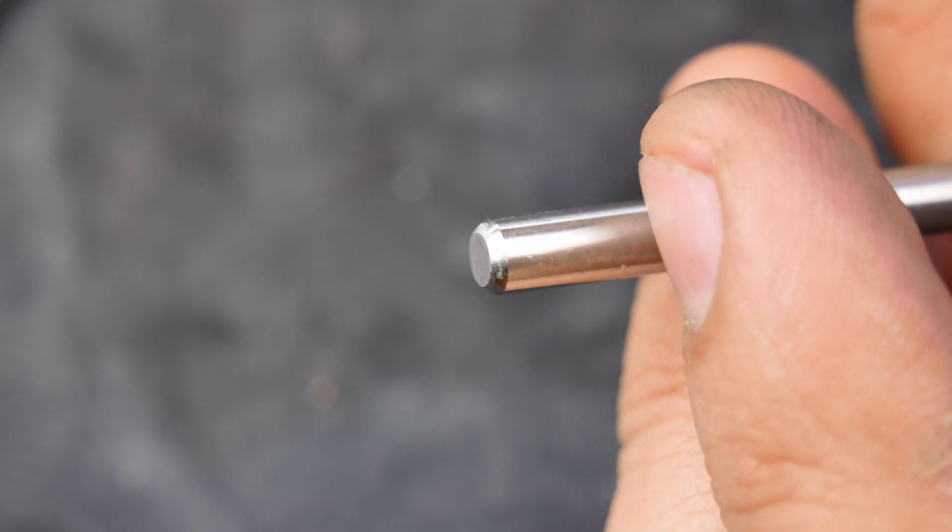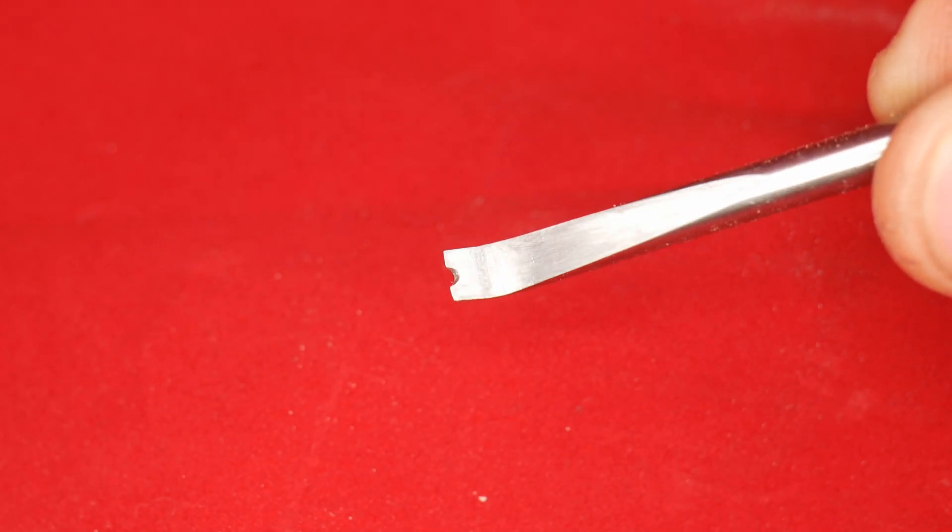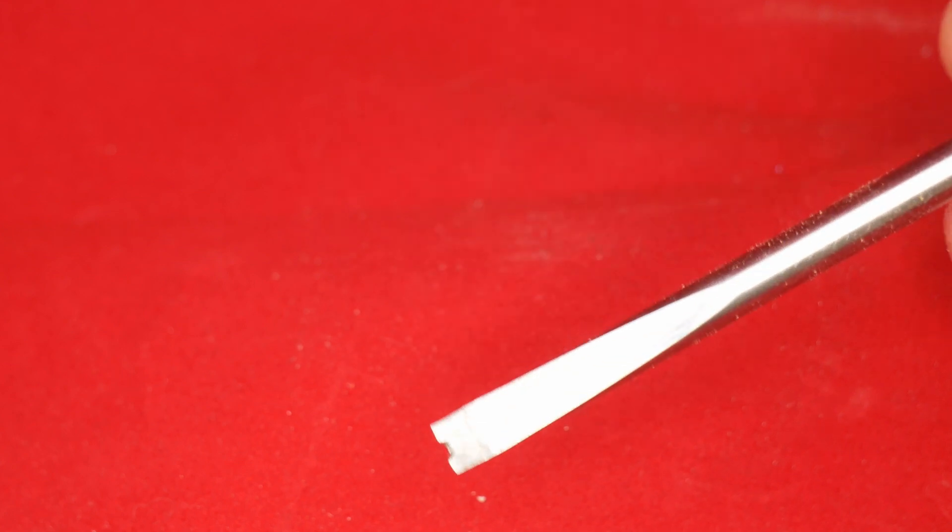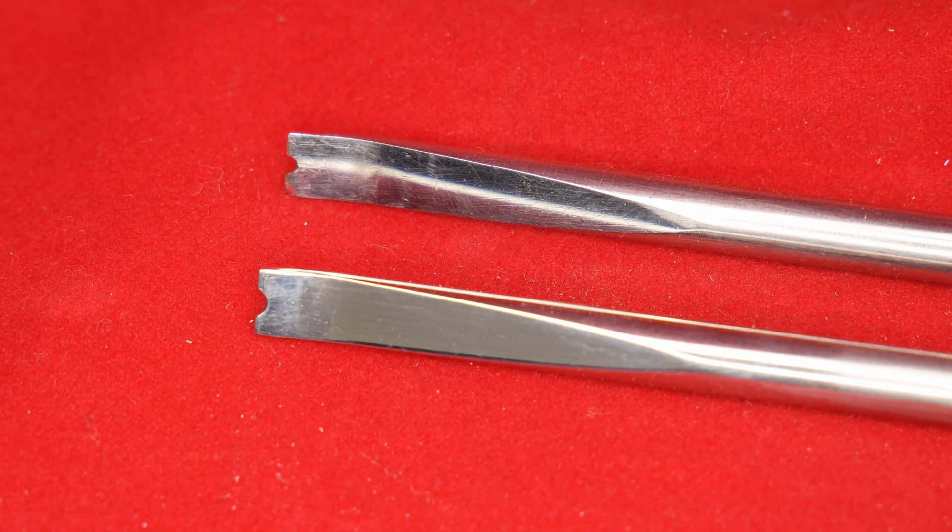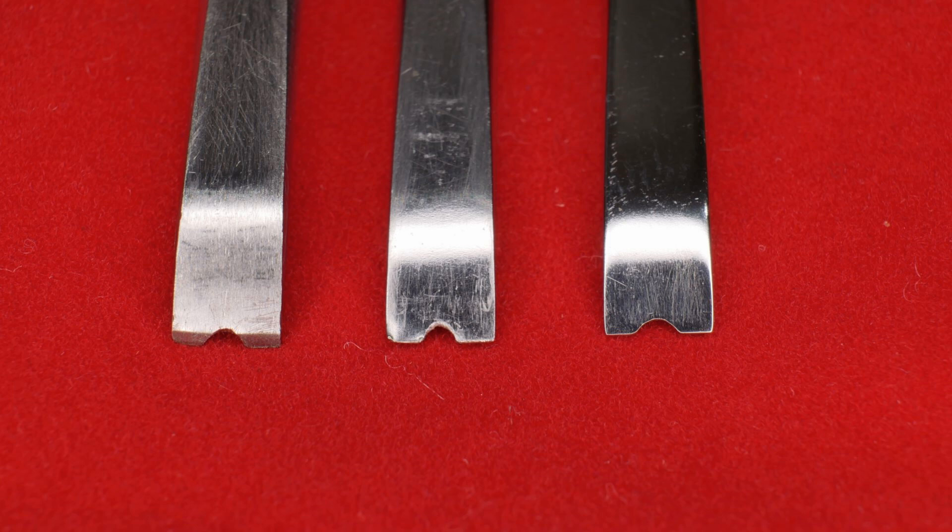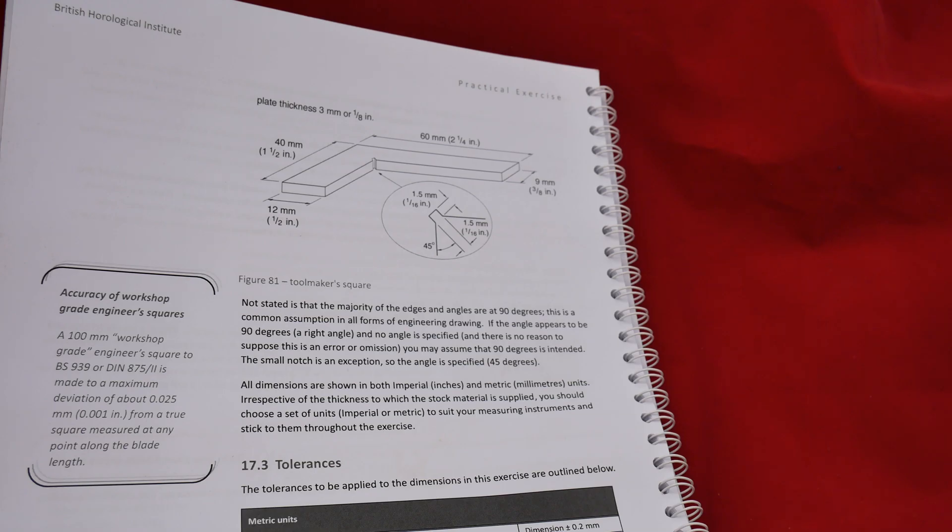A bit of sandpaper to finish everything up, and bang! My first practical exercise was complete. But one isn't enough, so I cracked on and knocked out a couple more. I've clearly got a lot of work to do to get my filing up to the level that I need to make some nice-looking clocks. But for my first practical exercise, I'm pretty happy with that, and I'm feeling enthusiastic about cracking on with the second exercise, making up an engineer's square.